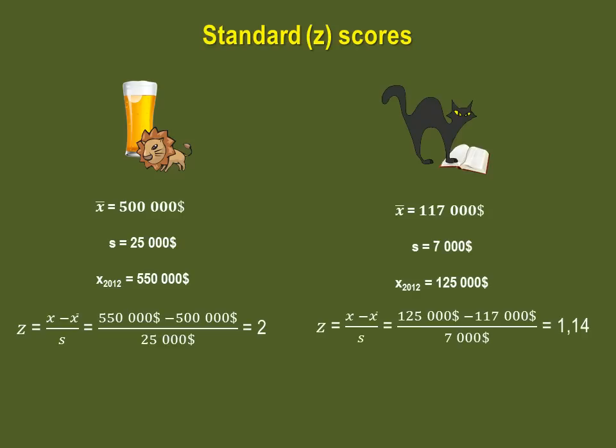Now, as for the Black Cat, using the same formula, but with the values referring to the Black Cat, we get a z-score of 1.14. So even though both businesses actually had better than average years, the Lions' higher z-score allows us to state that it has indeed had a better year than the Black Cat.